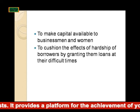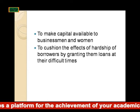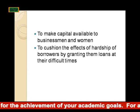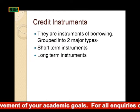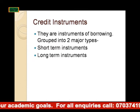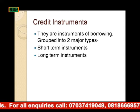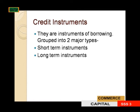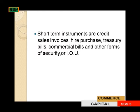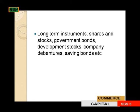Credit also makes capital available to businessmen and women, and it cushions the effects of hardship of borrowers by granting them loans at their difficult times. Credit instruments are instruments of borrowers grouped into two major types: short-term instruments and long-term instruments. Short-term instruments include credit sales invoices, hire purchase, treasury bills, commercial bills, and other forms of security or IOU.